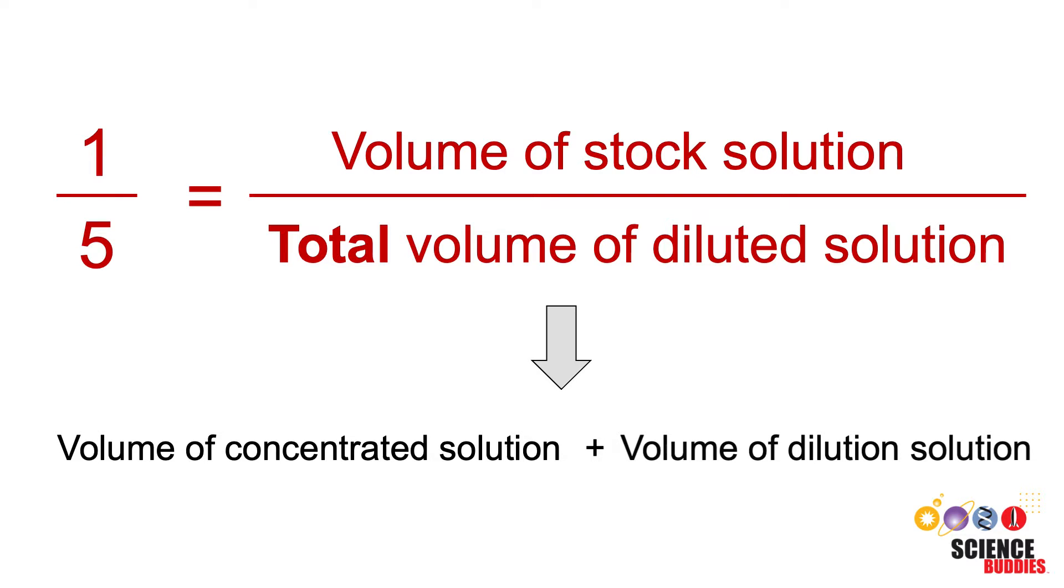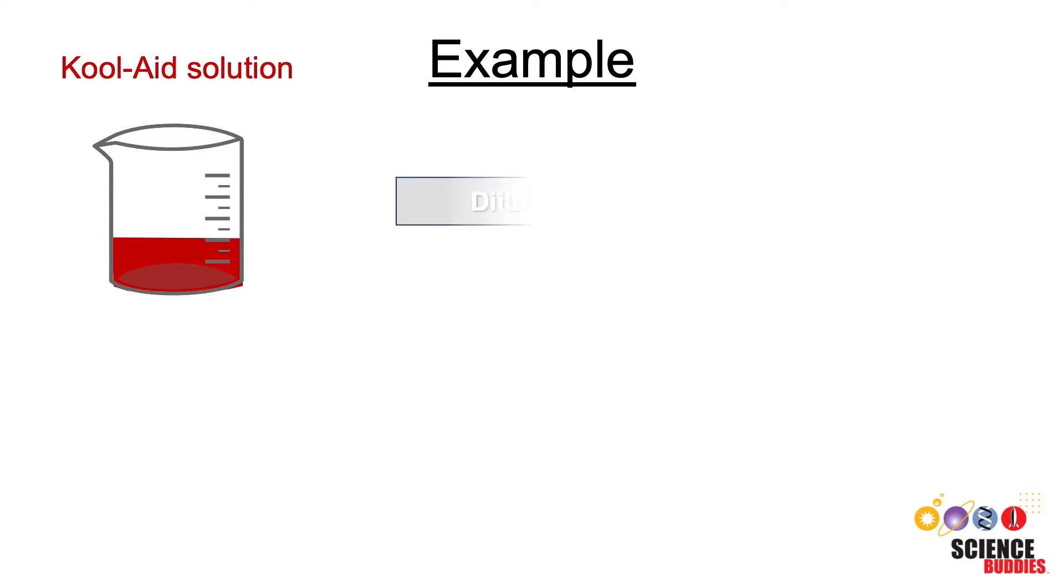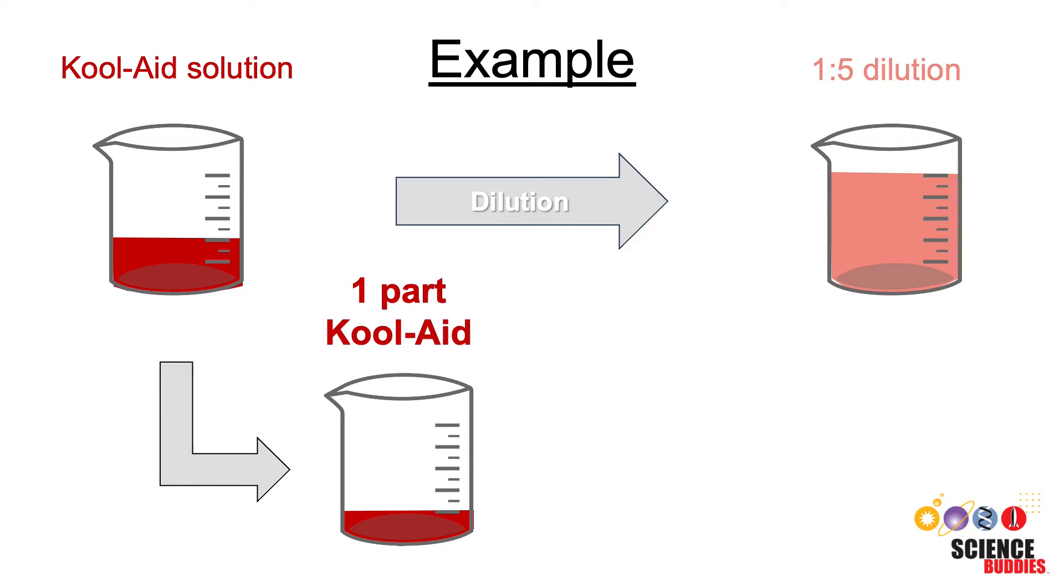Let's look at an example to see what this means. If we wanted to make a 1 to 5 dilution of our Kool-Aid solution, we would need to take 1 part of the Kool-Aid solution and add it to 4 parts of water to make a total dilution volume of 5 parts.